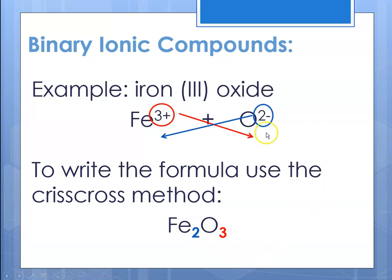Notice that this two comes down and becomes the subscript on Fe — no sign — and the three comes down and becomes the subscript on O. So the correct formula for iron(III) oxide is Fe₂O₃. If you think about the charges: two times three is plus six, and three times negative two is negative six, and plus six minus six equals zero. We've made a neutral compound.